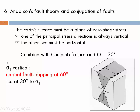Now let's combine that with the Coulomb failure criterion for brittle failure, with an internal angle of friction of about 30 degrees, which applies on average to most common rocks of the Earth's crust. If we place sigma 1 in a vertical direction, we produce normal faults dipping at 60 degrees — that is, at an angle of 30 degrees with respect to sigma 1.